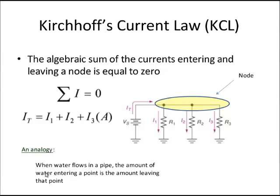In a previous lecture we talked about Kirchhoff's voltage law and found that the voltage drops around a closed circuit are equal to the voltage source. In a parallel circuit the algebraic sum of the currents entering and leaving a node is equal to zero. Here we have current leaving the voltage source going to three resistors R1, R2 and R3, all connected at a common node. So IT equals the algebraic sum of I1 plus I2 plus I3, or equivalently IT minus I1 minus I2 minus I3 equals zero.